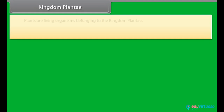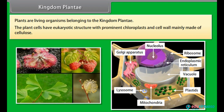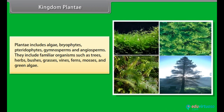Plants are living organisms belonging to the kingdom Plantae. The plant cells have eukaryotic structure with prominent chloroplasts and cell wall mainly made of cellulose. Plantae includes algae, bryophytes, pteridophytes, gymnosperms and angiosperms. They include familiar organisms such as trees, herbs, bushes, grasses, vines, ferns, mosses and green algae.